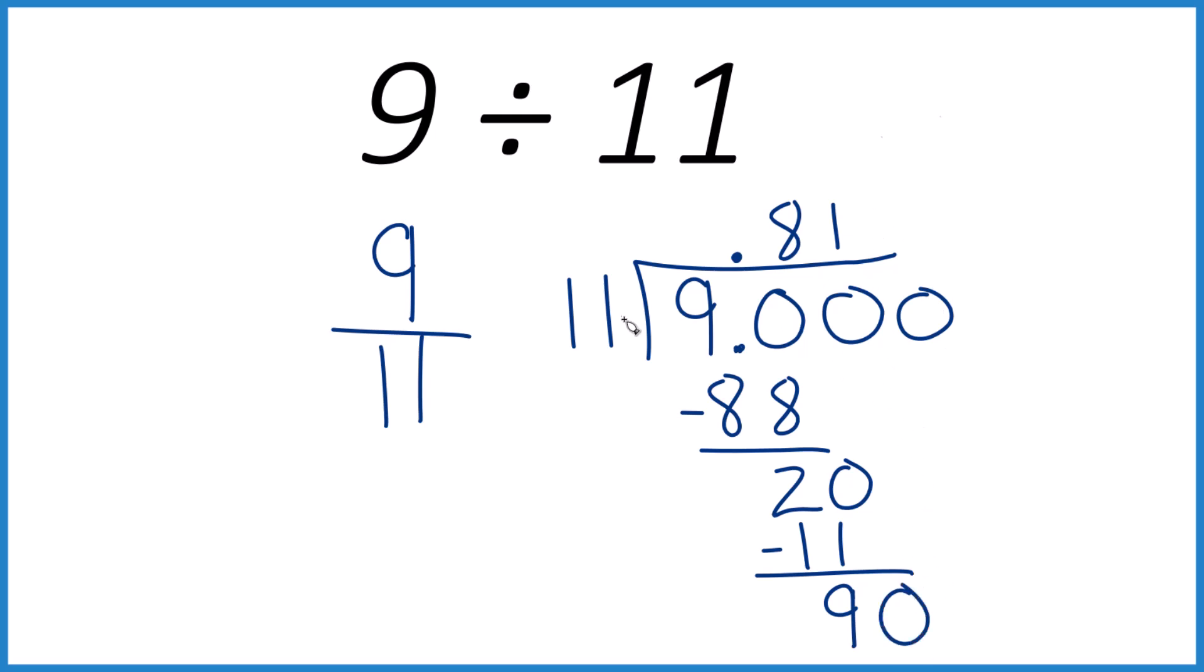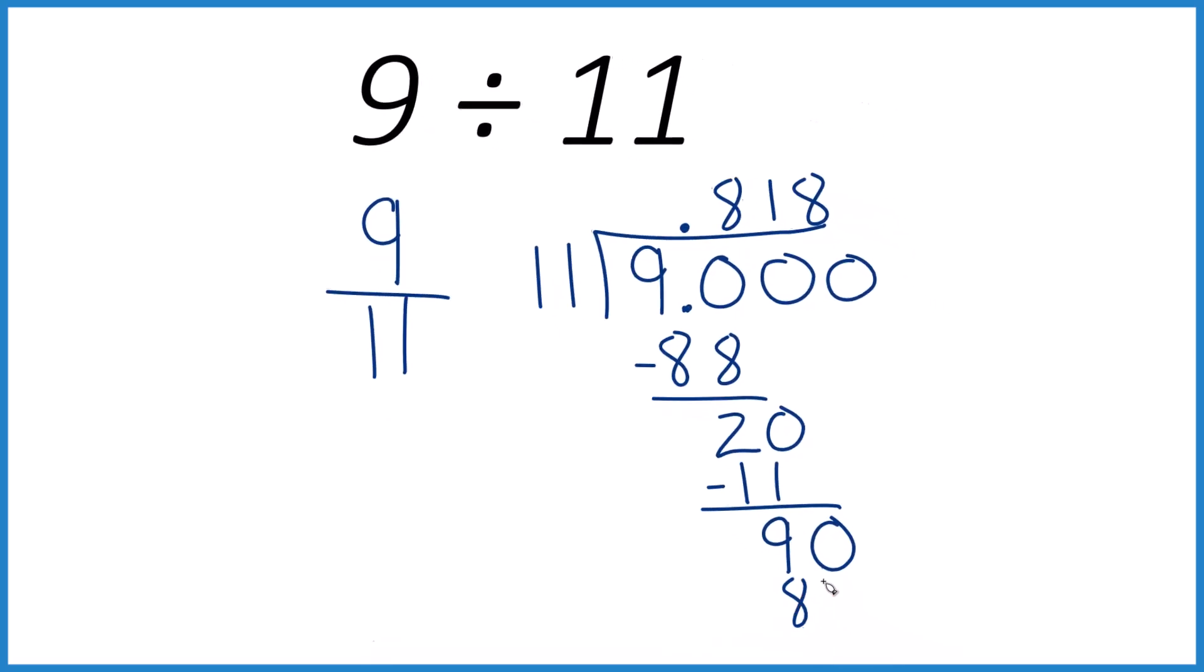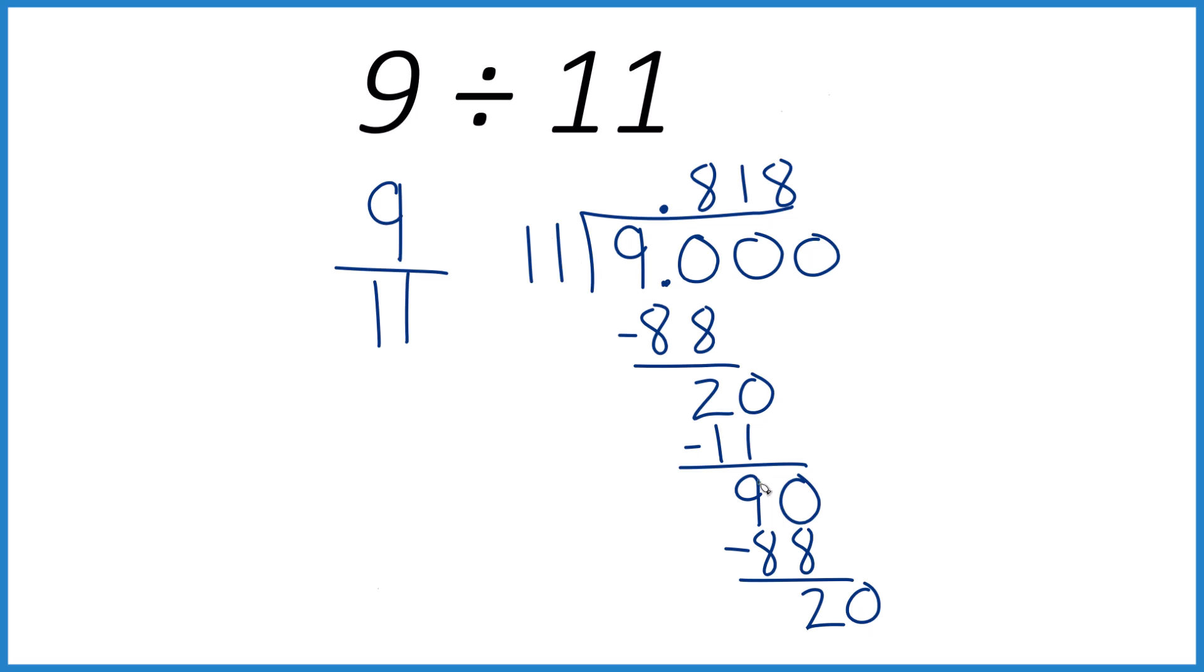and 11 goes into 90 8 times. 8 times 11 is 88. Subtract, and 11 goes into 20 1 time. And you can see this 81.8181, this 81 keeps repeating.